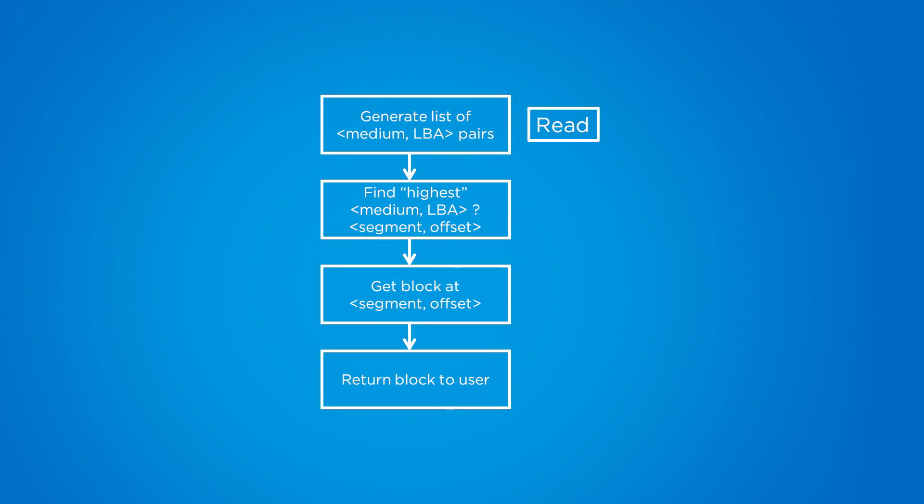If we look at the Pure IO path on the read side, Pure generates a list of LBA pairs using the medium table. They will then find the highest of those pairs to get the proper offset and then get the actual blocks before they return them to the user. Pretty straightforward.